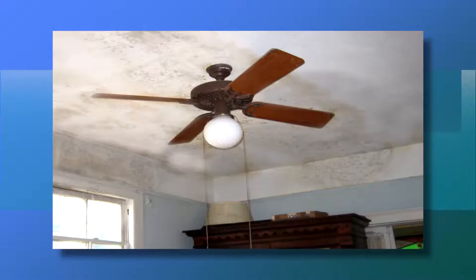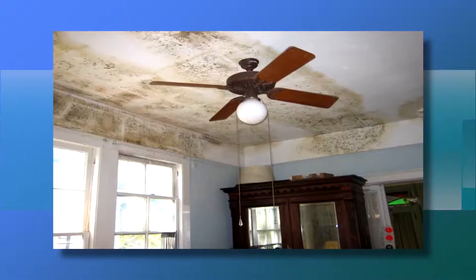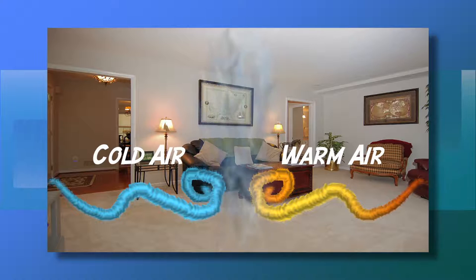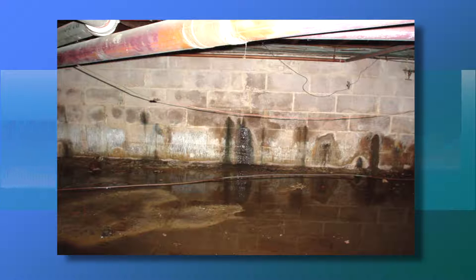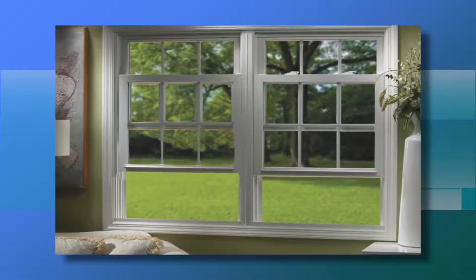Excessive moisture not only leads to the growth of mold and decay fungi, but it is also associated with increased insect activity and decreased indoor air quality. When warm, moist air comes into contact with a surface that is too cold, moisture condenses. The water and frost that you see collecting on windows is a visible example. Reducing sources of moisture and increasing the exchange of moist or stale air with fresh air reduces potential air quality problems.